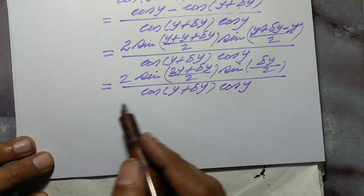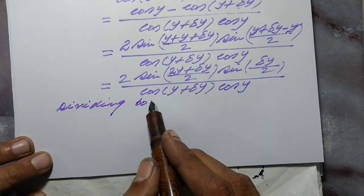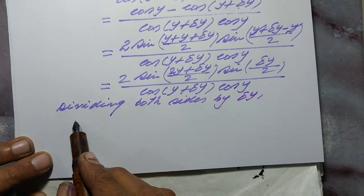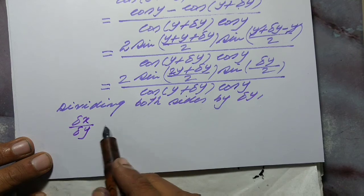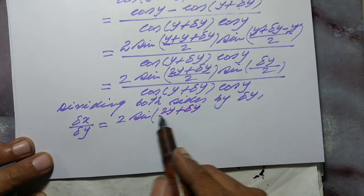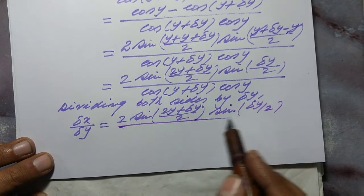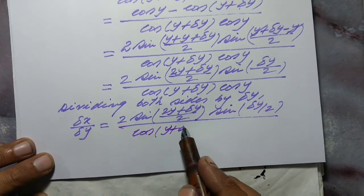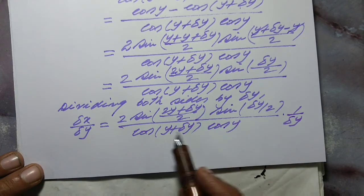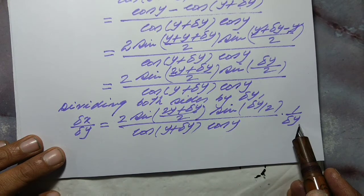Now dividing both sides by delta y, we get delta x upon delta y is equal to 2 sin[(2y + delta y)/2] into sin(delta y / 2), divided by cos(y + delta y) into cos y, into 1 upon delta y, because we have divided both sides by delta y. This 2 may be written in the denominator of delta y.